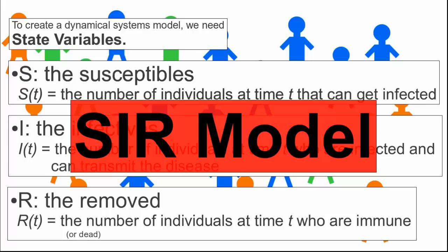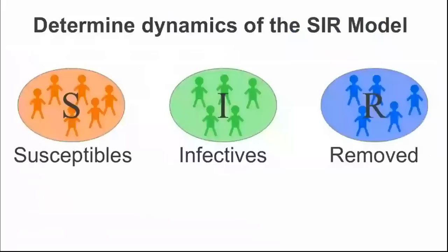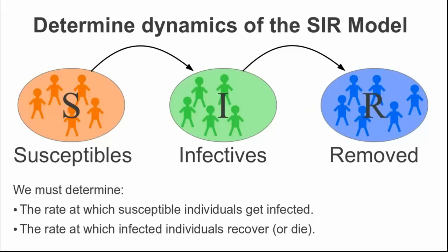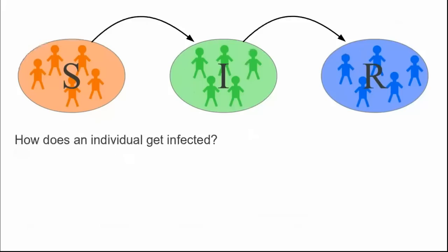Once we have determined the things that evolve with time—er, I mean the state variables—the next step is to determine a rule for how they should change. To determine the dynamics of the S, I, R model, we need to come up with mathematical expressions that capture how an individual goes from susceptible to infective to removed. Since there are only two transitions, we just need to determine the rates of two changes. We must determine the rate at which susceptible individuals get infected, and we must determine the rate at which infected individuals recover or die if we are dealing with a scarier disease.